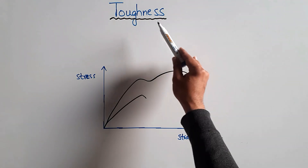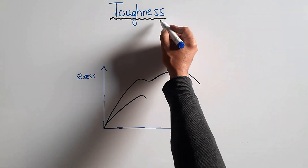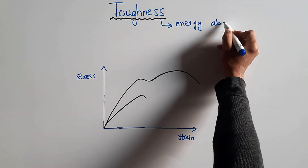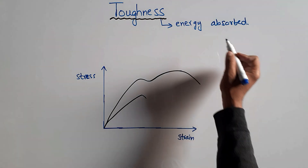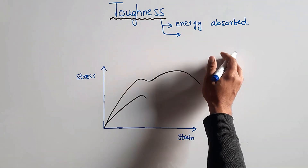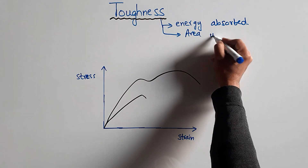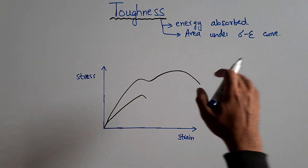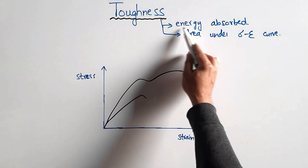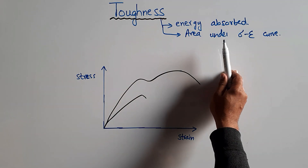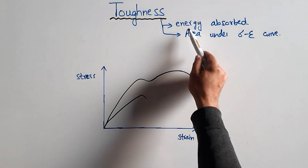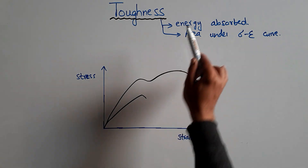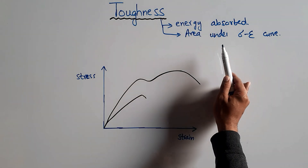Toughness can be defined as the energy absorbed by a material during loading. We can also say that it is the area under the stress-strain curve. These are the two definitions of the toughness of a material. When a load is applied on an object, it will start to absorb energy, and the energy absorbed by the material during loading is its toughness. The more energy absorbed by a material, the tougher the material will be.